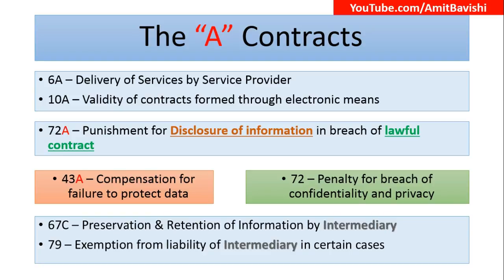72A discusses information that is being acquired through a Lawful Contract — mark the words 'Lawful Contract.' If such information is disclosed, then punishment will be under Section 72A. Now, 43A deals with compensation for failure to protect data. In 72A there was a breach of Lawful Contract, the information was disclosed, and there was punishment. In 43A, there is compensation — compensation for failure to protect the data.